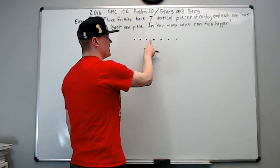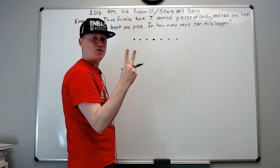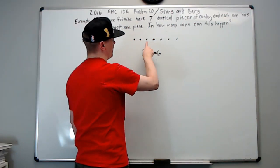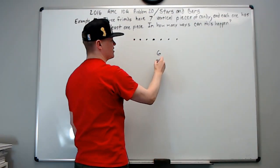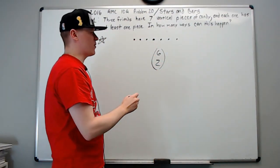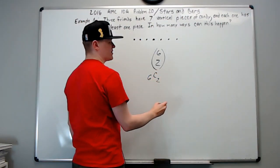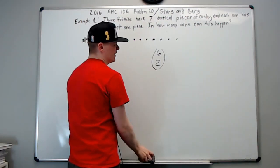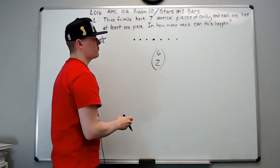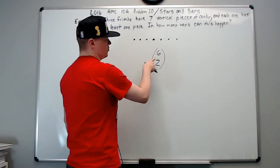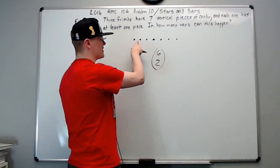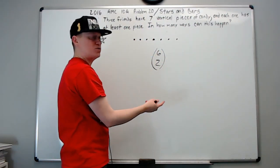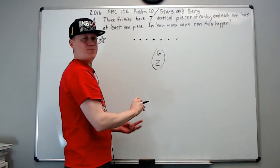Each gap can only hold one bar, and we have two dividers to place. So the answer is 6 choose 2 — six gaps, choose two of them to place dividers. Which two you choose determines how many pieces each person gets. If people are Aaron, Brad, and Charlie, the first group is Aaron's candy, the middle is Brad's, and the third is Charlie's.